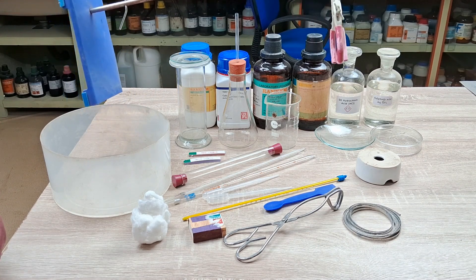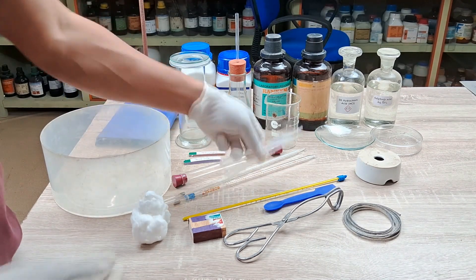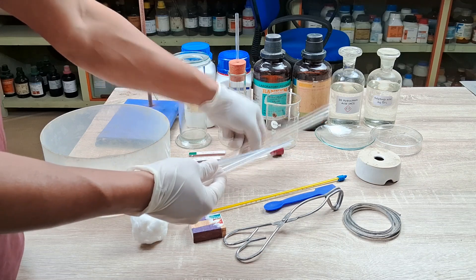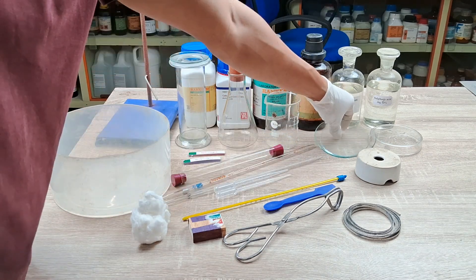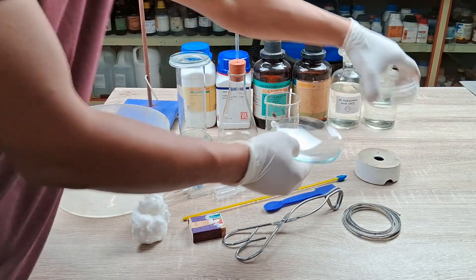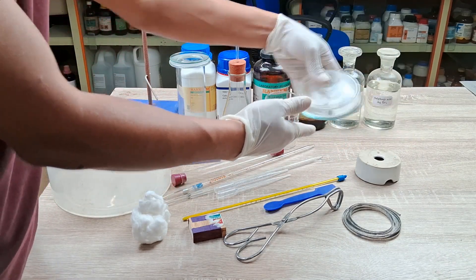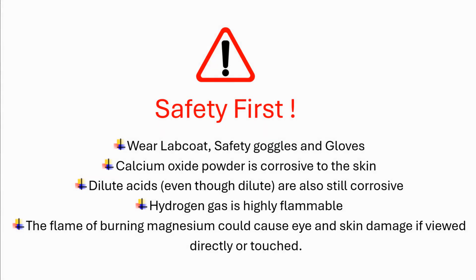A retort stand with a finger clamp, two droppers or pipettes, and two watch glasses or petri dishes. Before the start of the experiments, make sure to follow all necessary safety precautions in handling chemicals and fire. Wear a lab coat, safety goggles, and gloves.